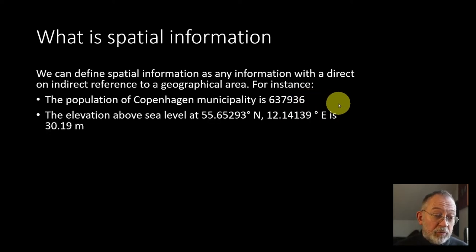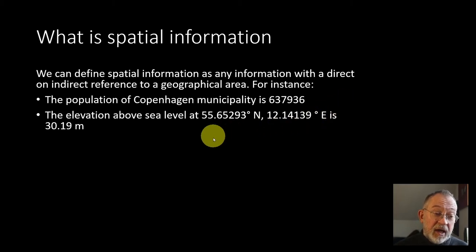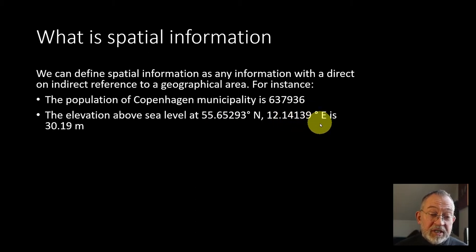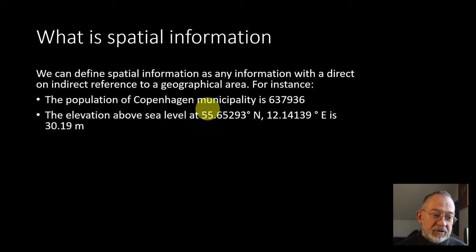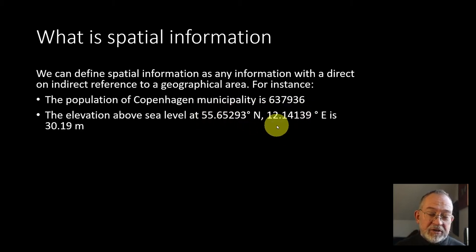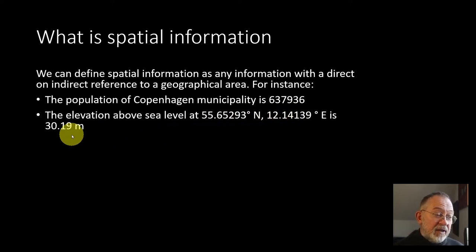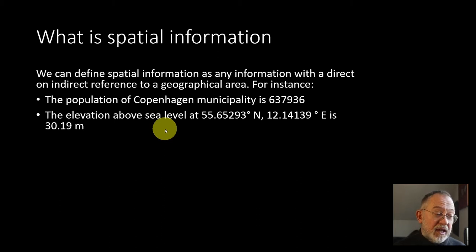Another example could be if we look at the elevation above sea level at 55.65 degrees north, 4.14 degrees east, and say that the elevation at this point is 13.19 meters. In this case, our geographical area is given by this reference point — it's referencing a single location, a point in space, and giving the attribute or property at that point.